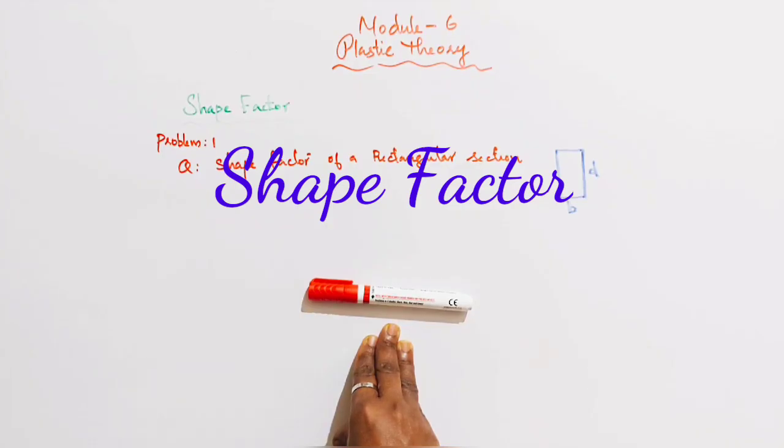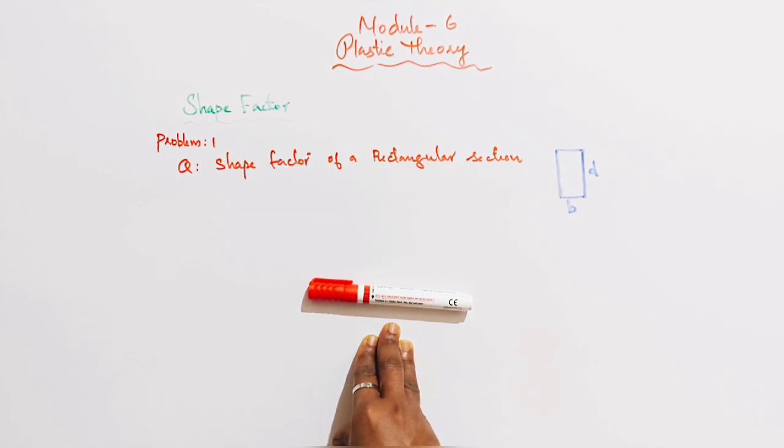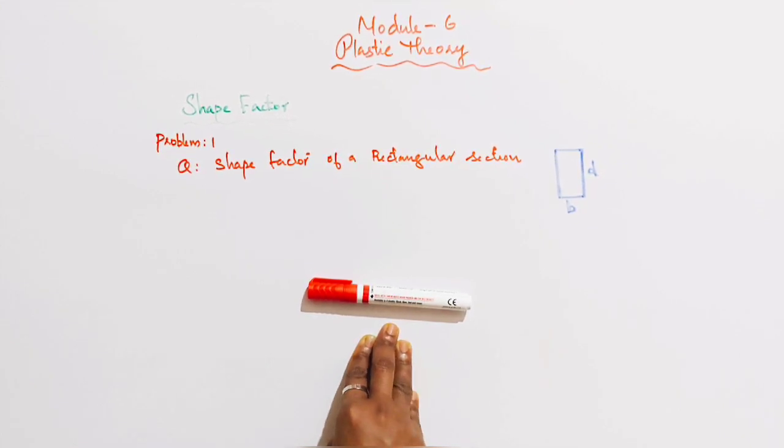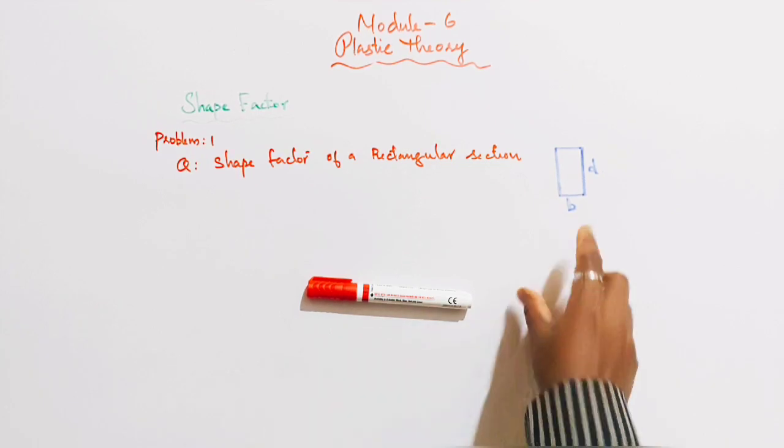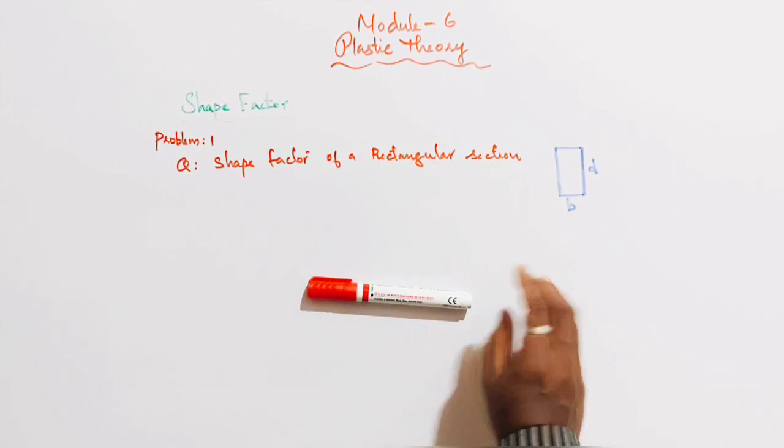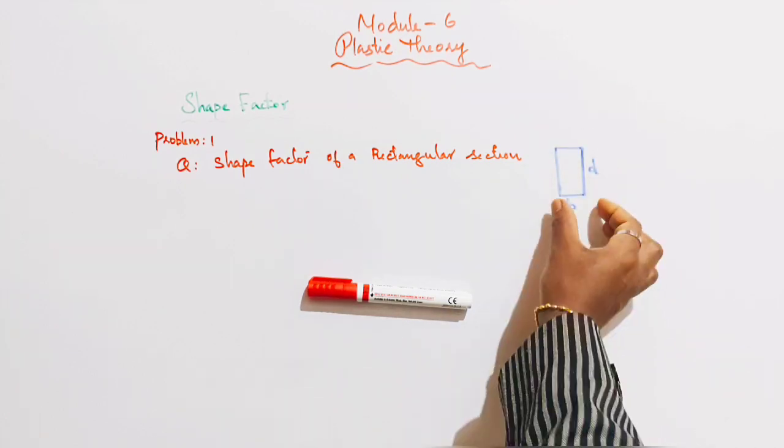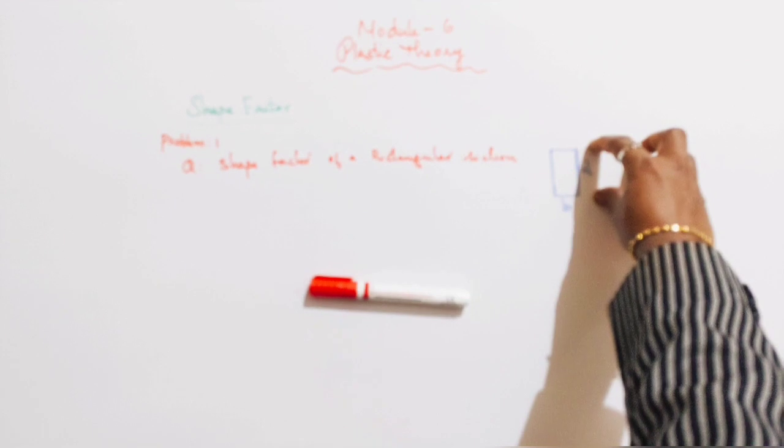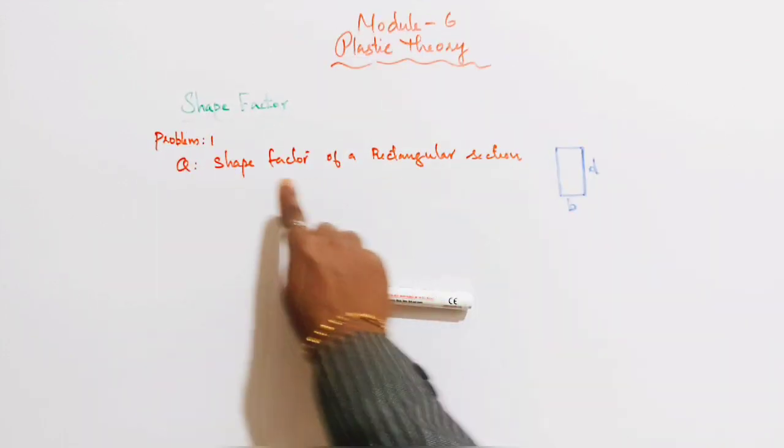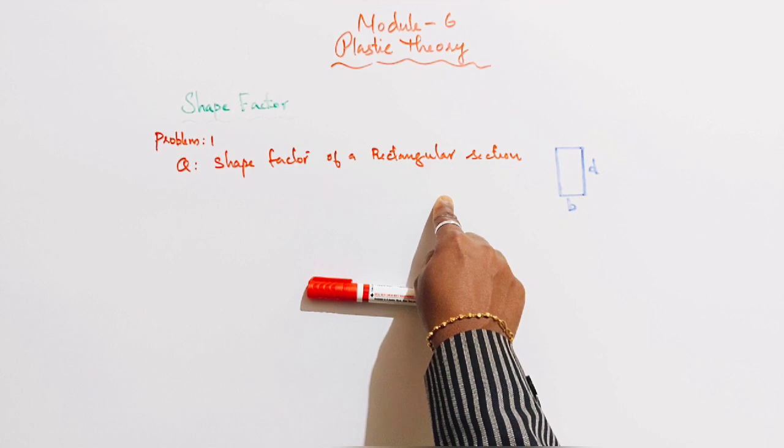Module 6, Plastic Theory. Topic, Shape Factor. Problem No. 1. Question: Shape Factor of a Rectangular Section. One rectangular section, Shape Factor, Find Out. We are looking at the rectangular section with breadth B and depth D. Shape Factor of a rectangular section.